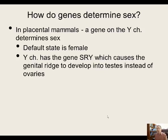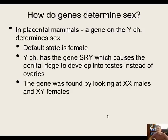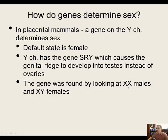SRY is a gene that produces a transcription factor product, not unlike PDX1. It turns on other genes that lead to the development of male features — for example, the testes. Without the SRY gene, the developing embryo will become female. That gene was discovered by looking at XX males and XY females. These are males who are genetically female and females who are genetically male. What happened was a chromosome translocation, where a piece of the Y chromosome containing the SRY gene was translocated onto the X chromosome, such that the SRY gene is found on those chromosomes. That single SRY gene was enough to allow the development of male features.